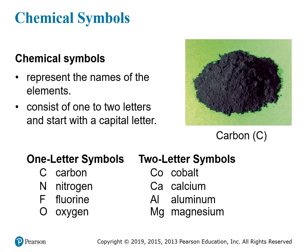This might seem trivial at first, but even looking at this brief list of elements, you can see why it's important. Some of the one-letter symbols are C for carbon, N for nitrogen, F for fluorine, and O for oxygen. Some of the two-letter symbols are Co for cobalt, Ca for calcium, Al for aluminum, and Mg for magnesium.